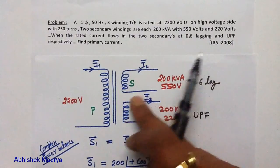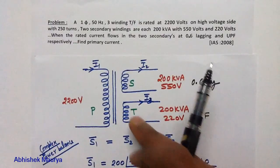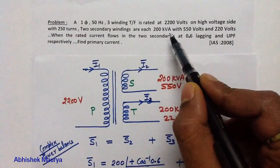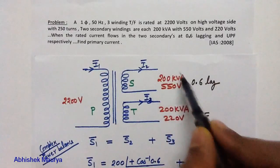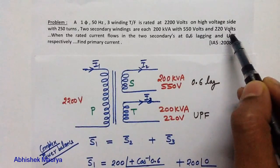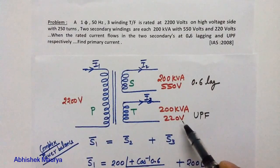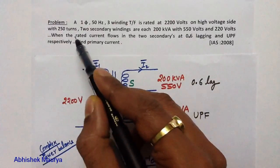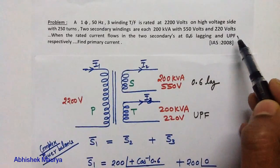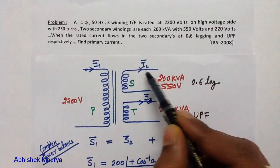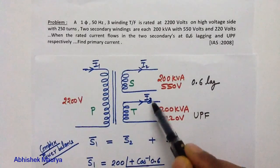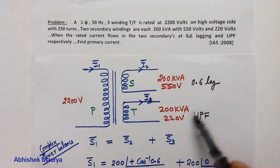The second secondary winding is known as the tertiary winding. The two secondary windings are each 200 kVA — 550 volts and 220 volts. The rated current I2 flows at a lagging power factor of 0.6, and the current I3 flows at unity power factor.